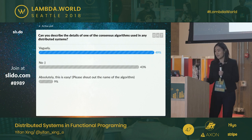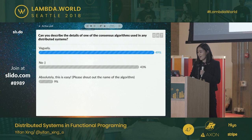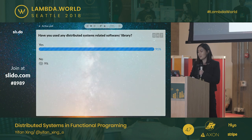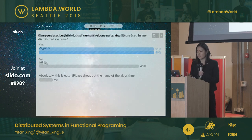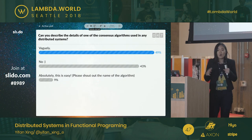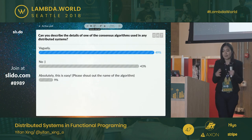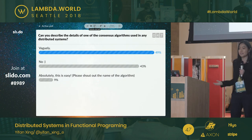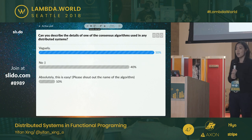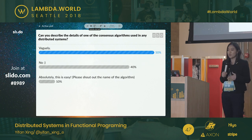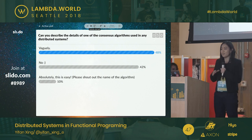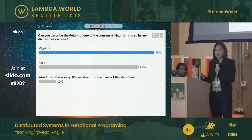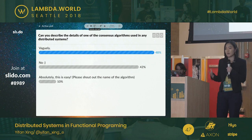So as you can see based on the poll, most of us have used distributed system related software, but only a few of us can really describe what it is — like how machines collaborate together in a distributed system setting. The goal of this talk is to close that gap and help people understand how the machines really work together.